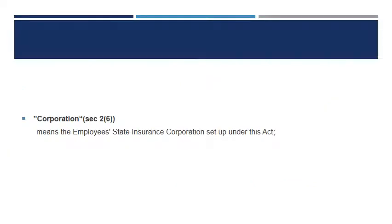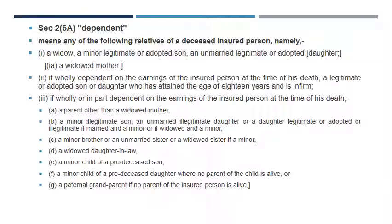Next — Corporation, Section 2 subsection 3. This means the Employee State Insurance Corporation, also called the ESI Corporation, which is the organization created under this Act.